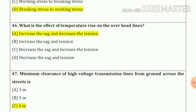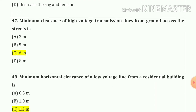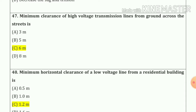Question number 46: the effect of temperature rise on overhead lines — answer is option number A: increase the sag and decrease the tension. Question number 47: minimum clearance of high voltage transmission line from ground across the street is 6 meters — option number C.